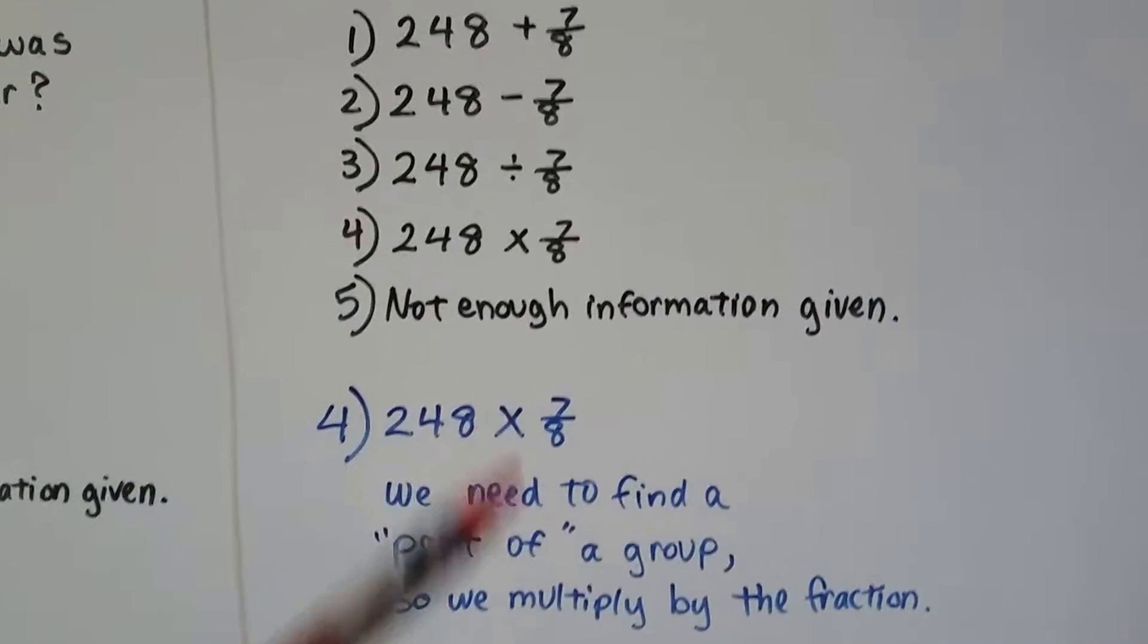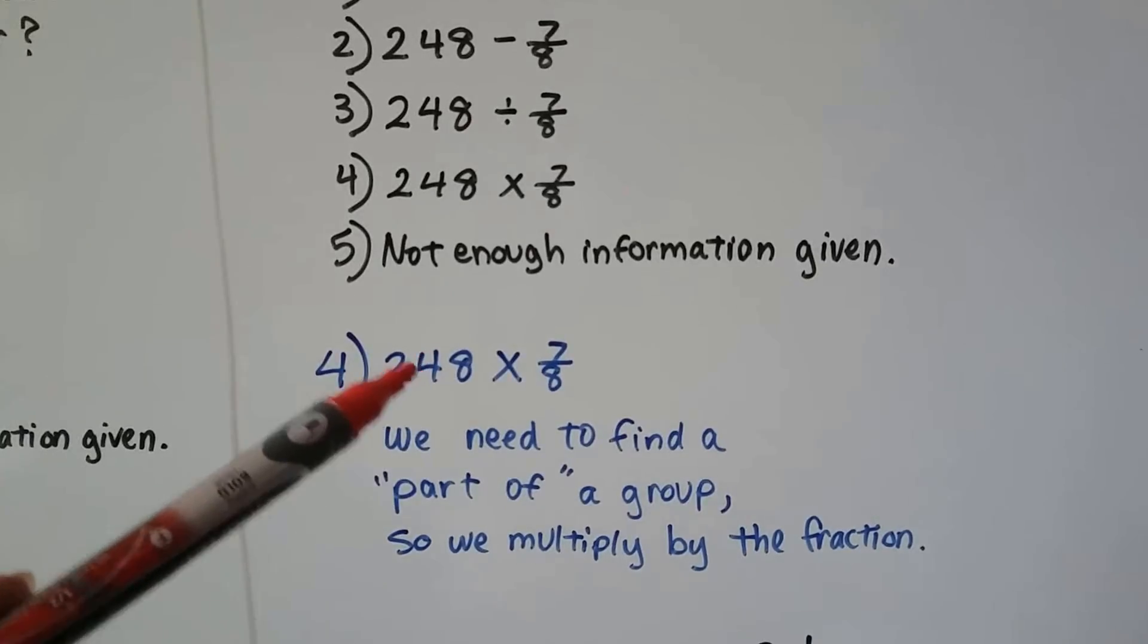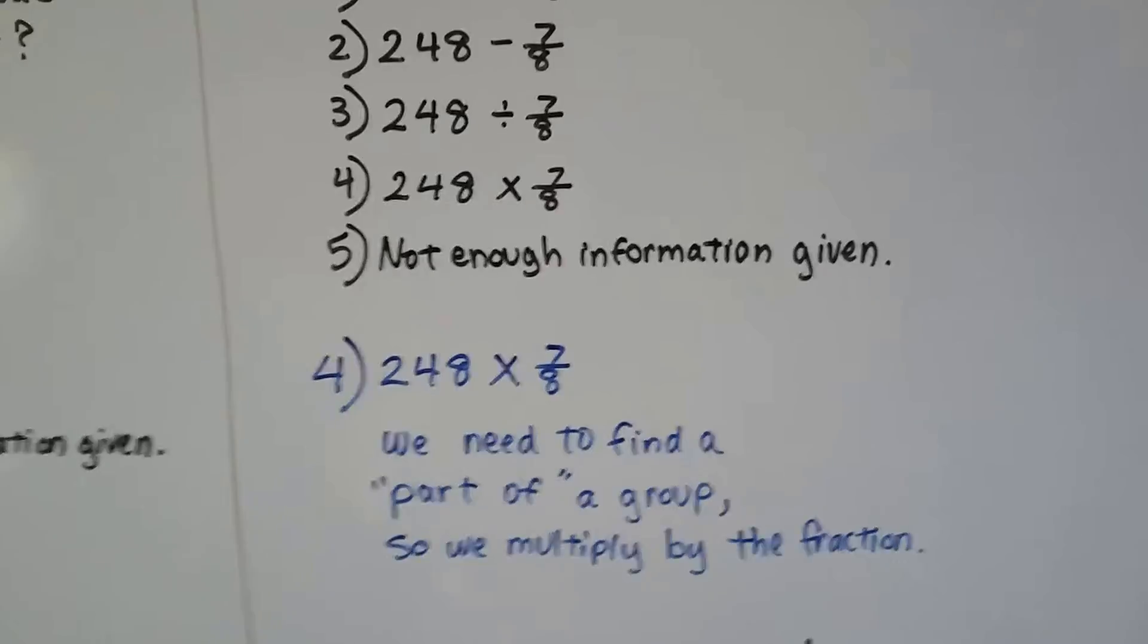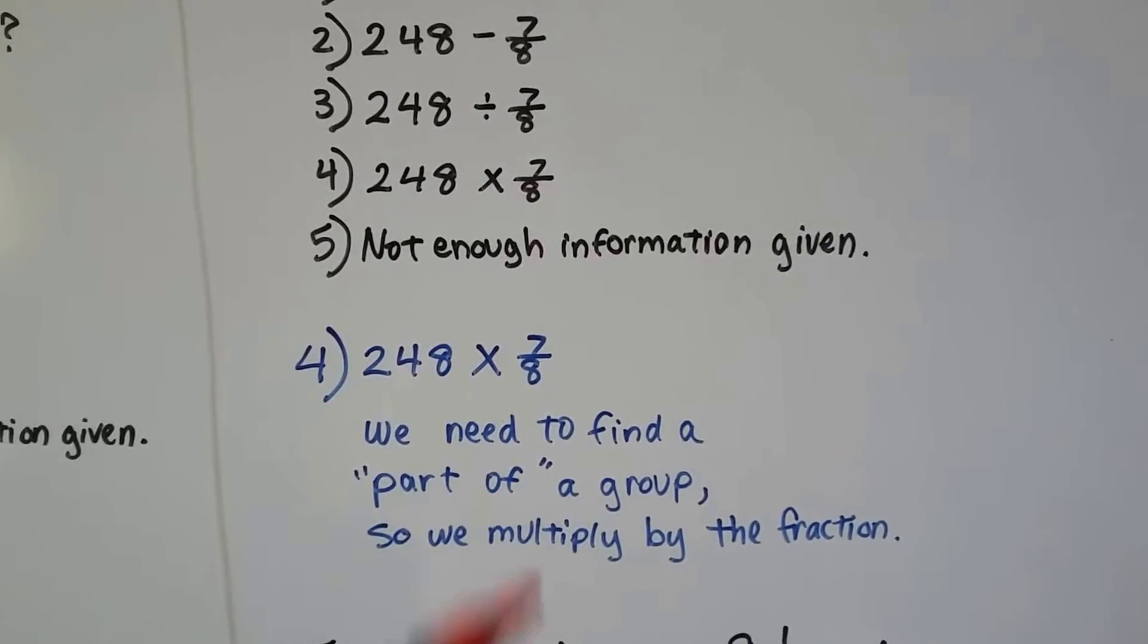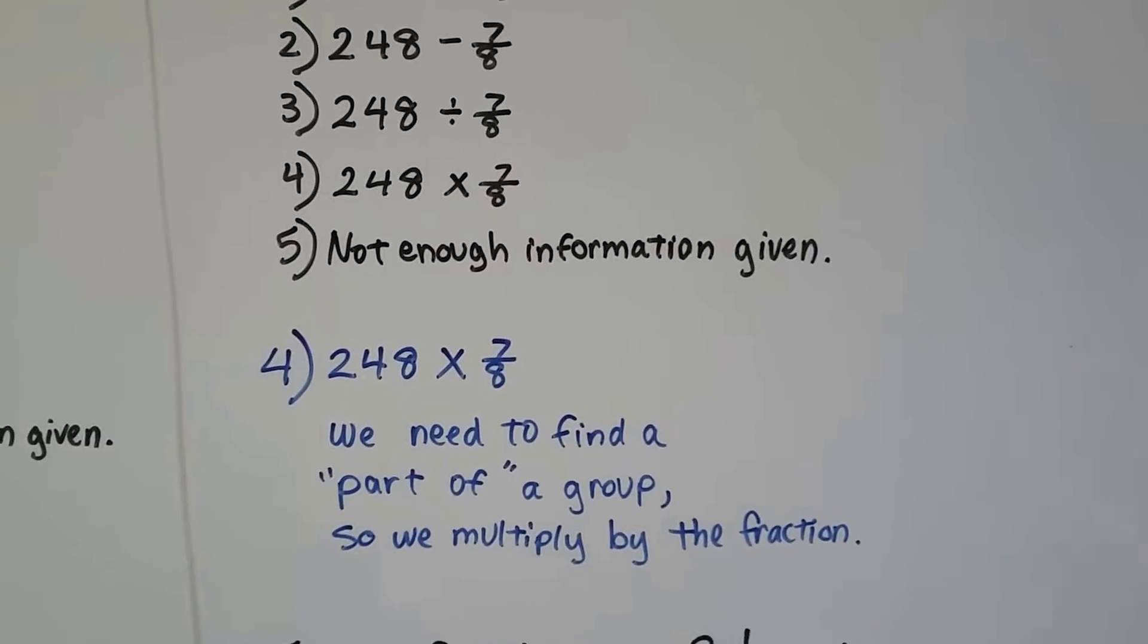We need to figure out what seven eighths of 248 is. So we're going to multiply because we need to find part of this entire group. That's the entire group of students. That's how many have a smartphone, seven eighths. So to find part of a group, we're going to multiply the 248 times the seven eighths. We're going to get into this more in lesson seven. Okay?